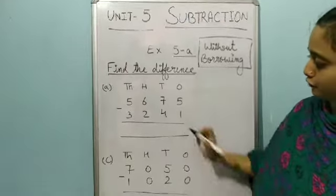5675 minus 3241. So we will begin doing from the ones place. First we will minus the ones place, then tens, then hundreds, then we will go to the thousands place. So 5 minus 1 — how many? 5 minus 1 will be 4.